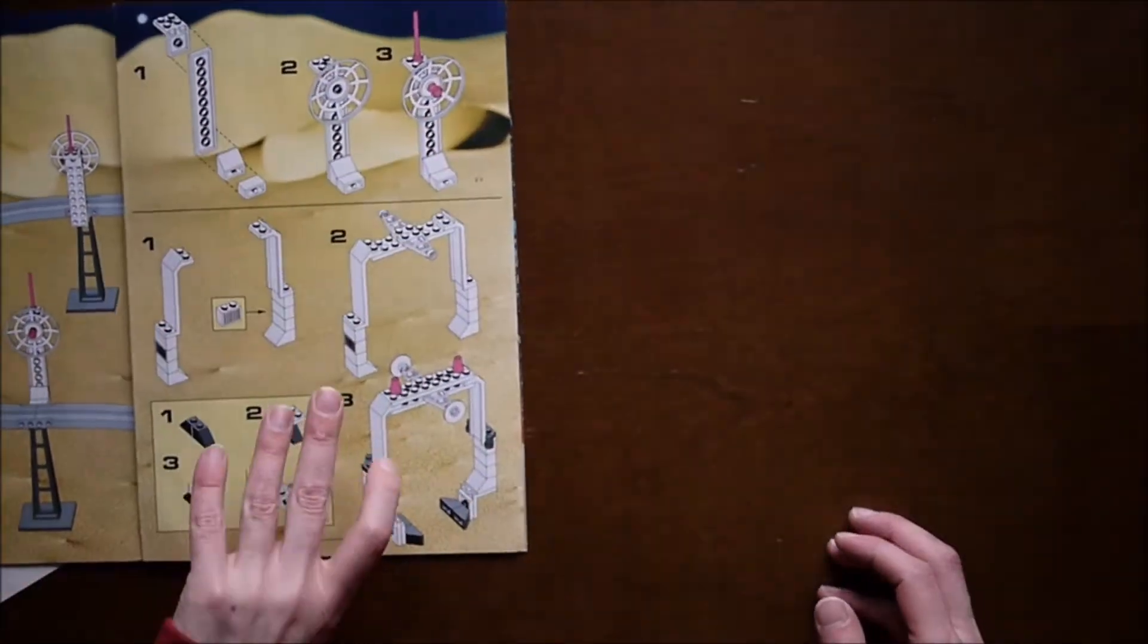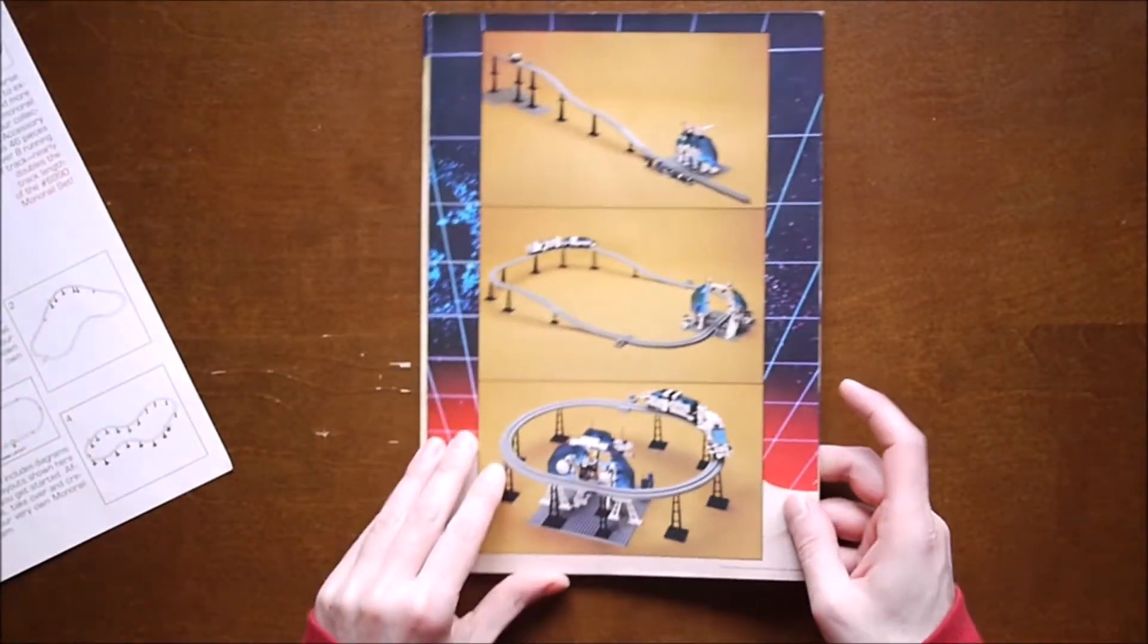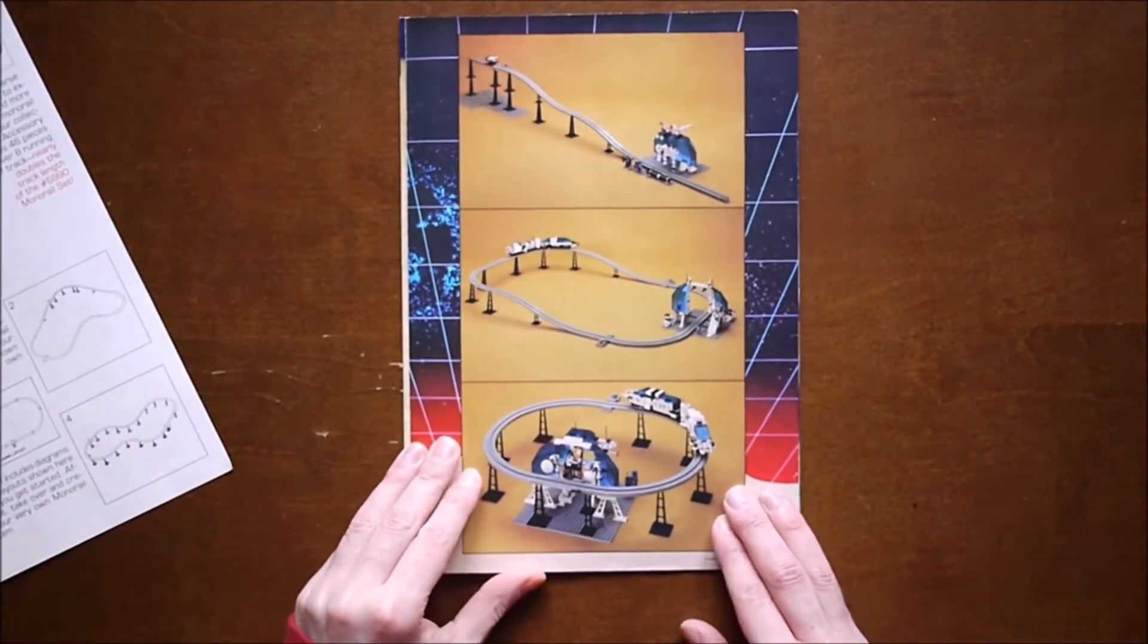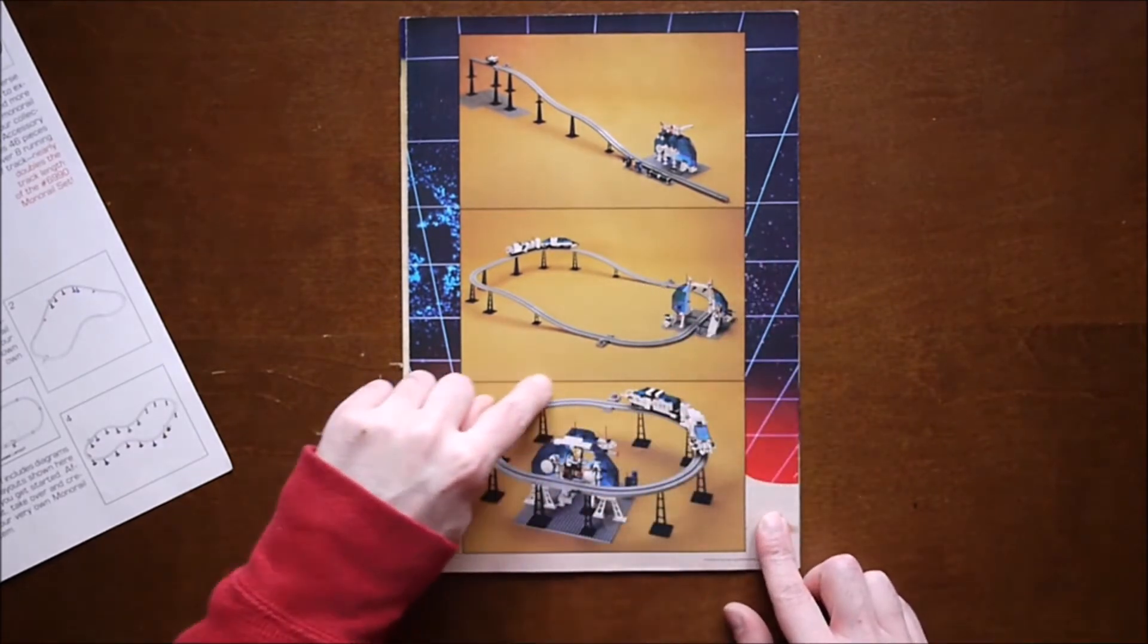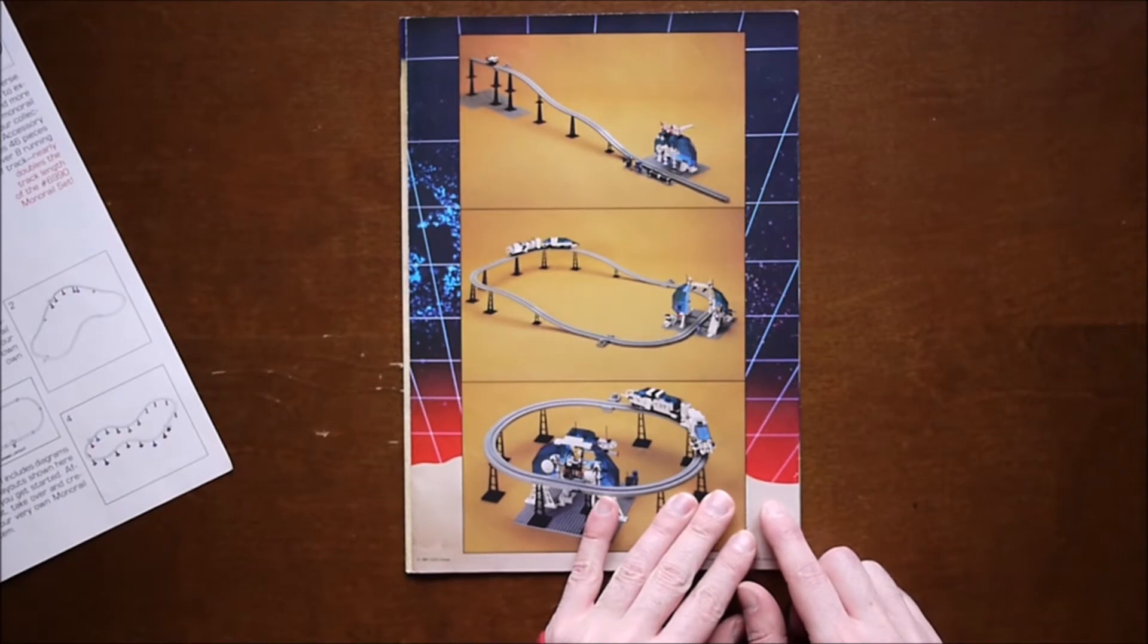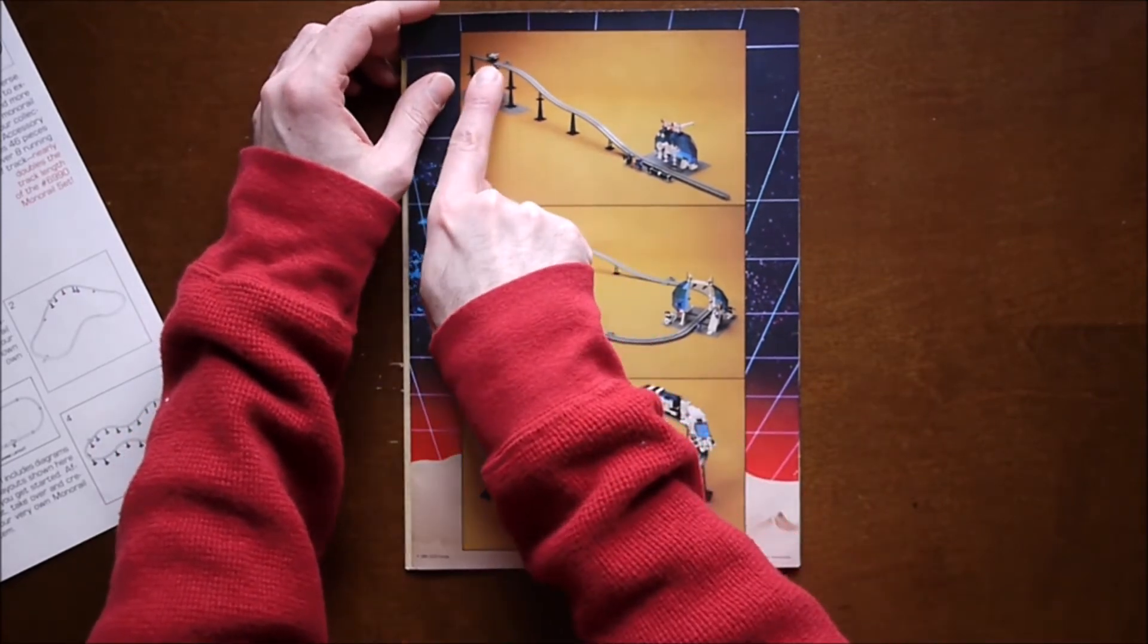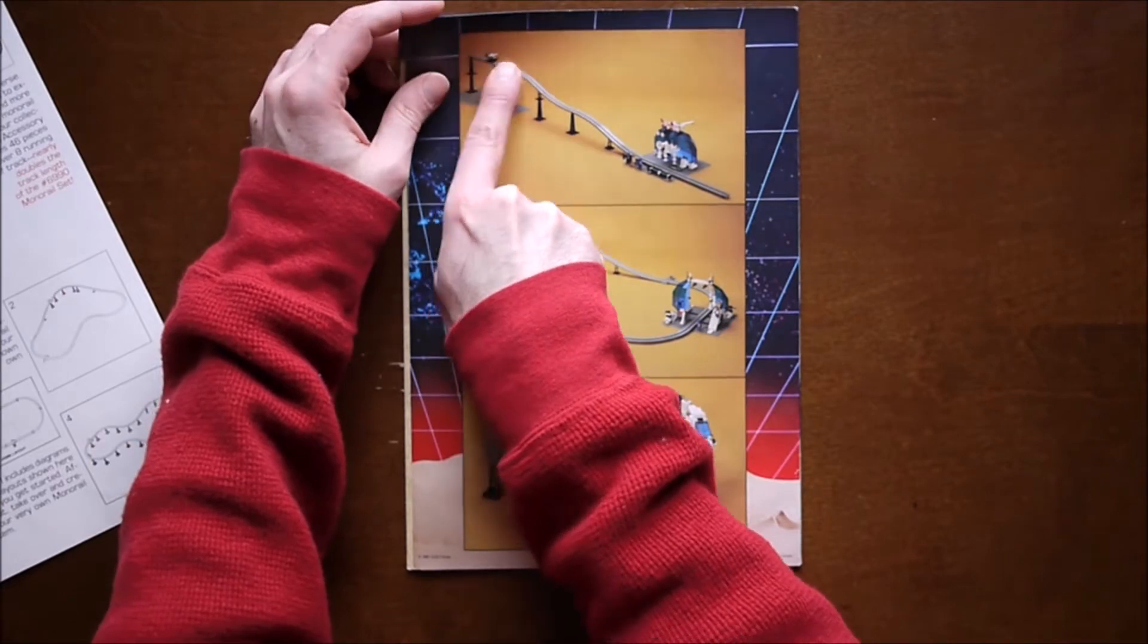We'll build it off camera though. I don't know how long it's going to take me to put it all back together. There's a photo on the back about some other things again that you can build. Do this little circle, looks like some kind of, sort of looks like a sled. They did this little vehicle. I don't think they're using the battery.